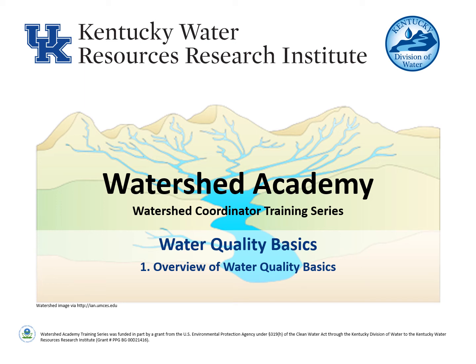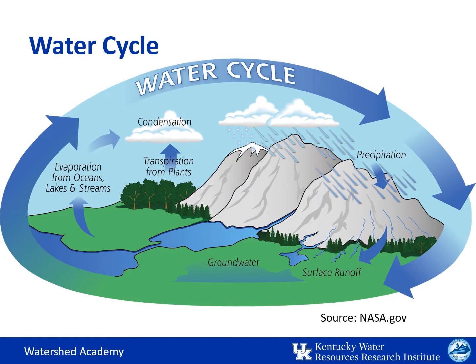As our introduction to water quality, we're going to start with the very basics, and that means revisiting the good old water cycle. The hydrologic cycle begins with precipitation falling to the earth in the form of rain, sleet, or snow. As this water falls, some of it evaporates back into the earth's atmosphere.